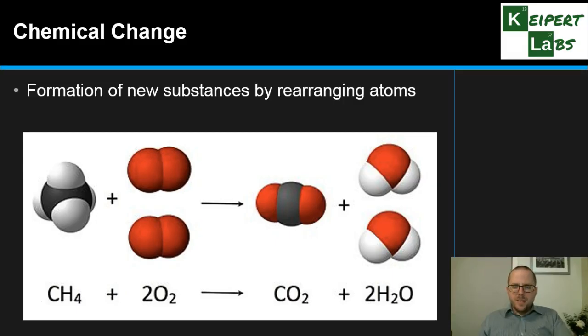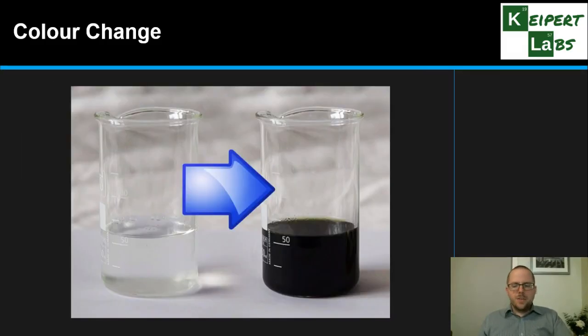We're going to start off with a look at a colour change. Seeing an example here that in this case we've gone from colourless to this really dark blue-black sort of colour, or it could be changing from red to green or it could be something more subtle that occurs as a chemical reaction is happening.